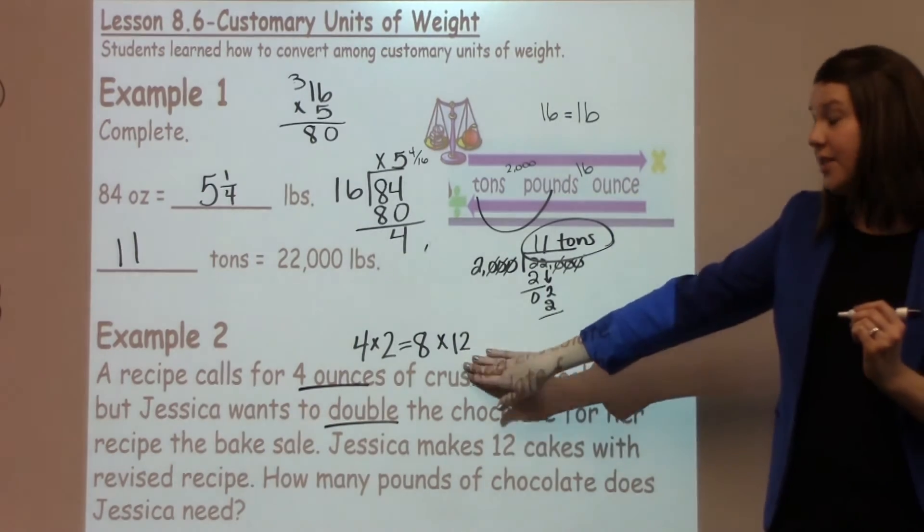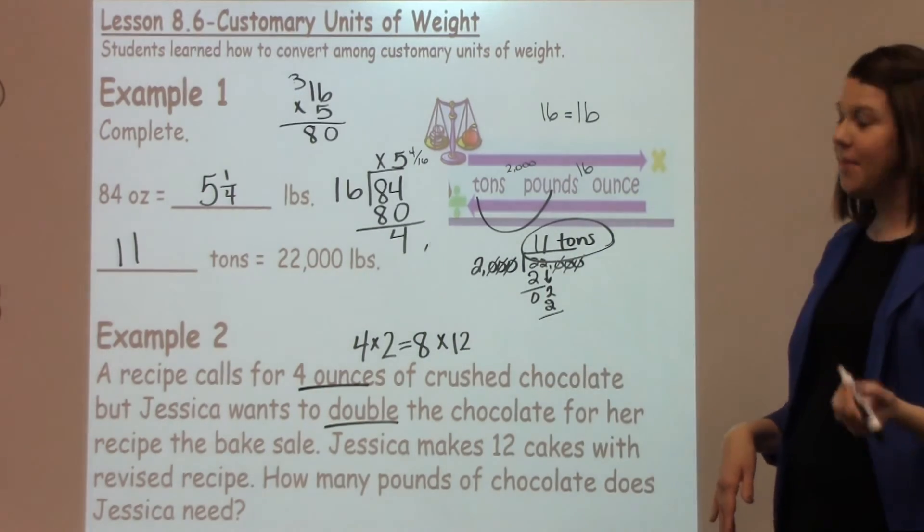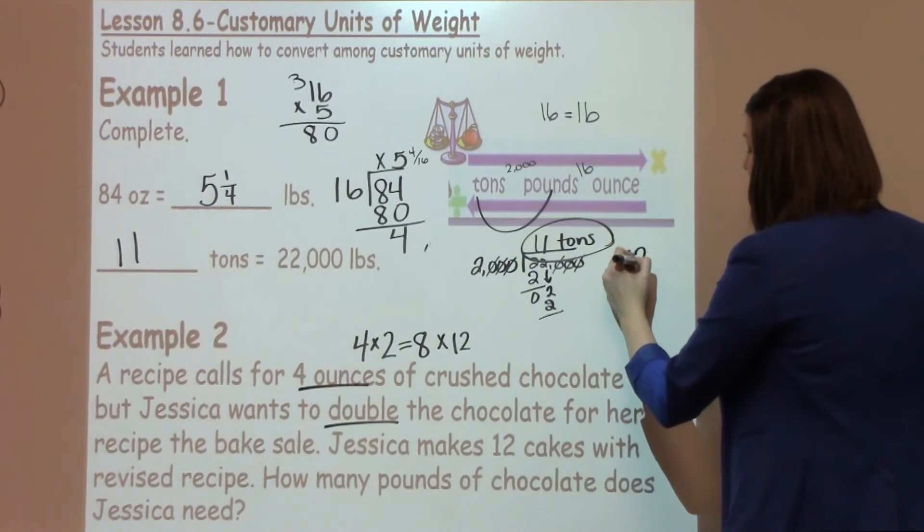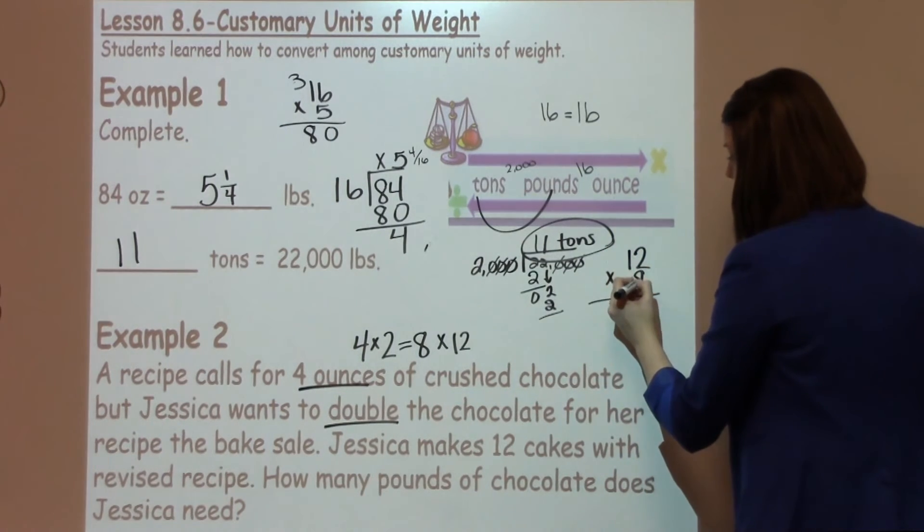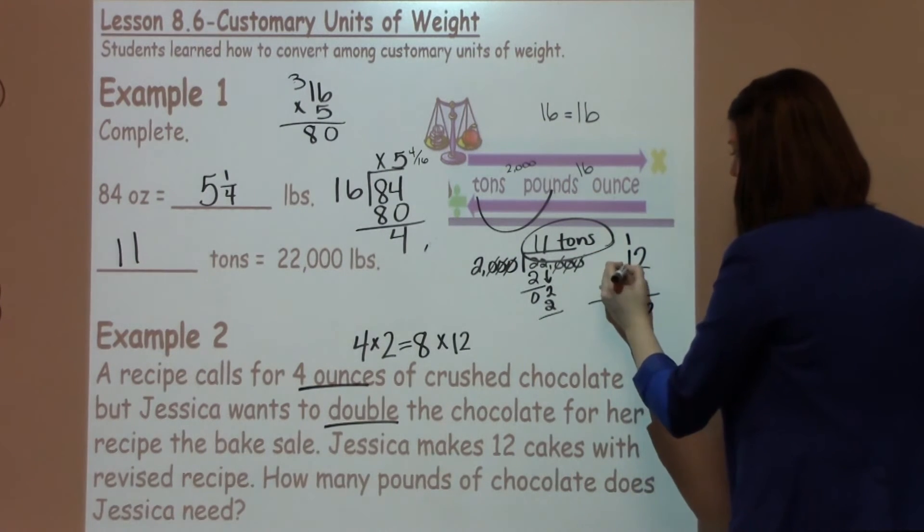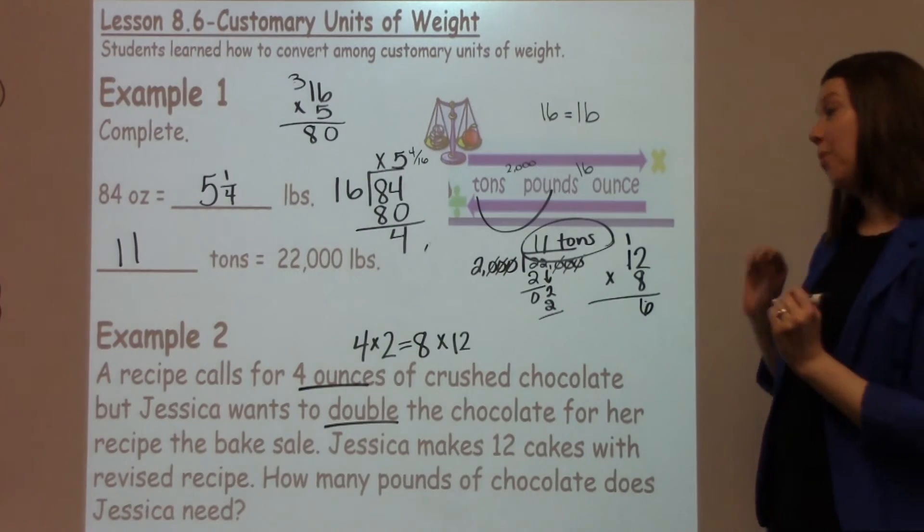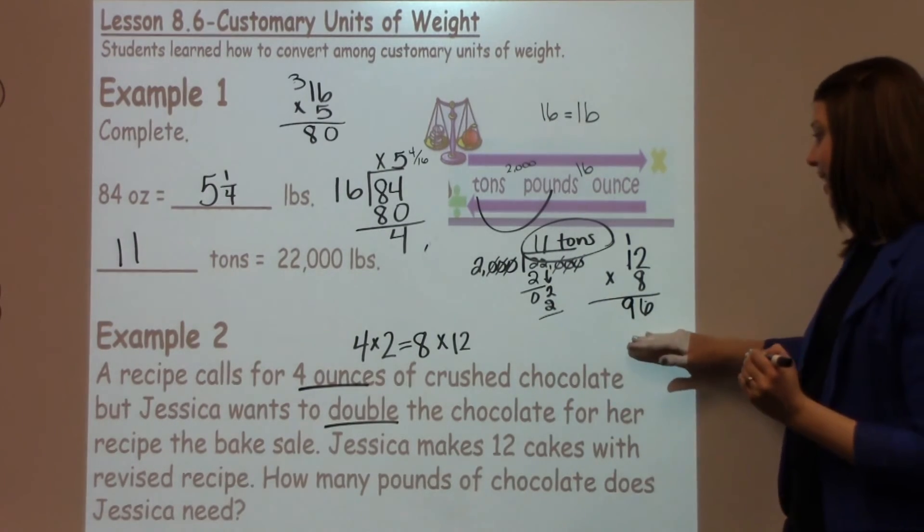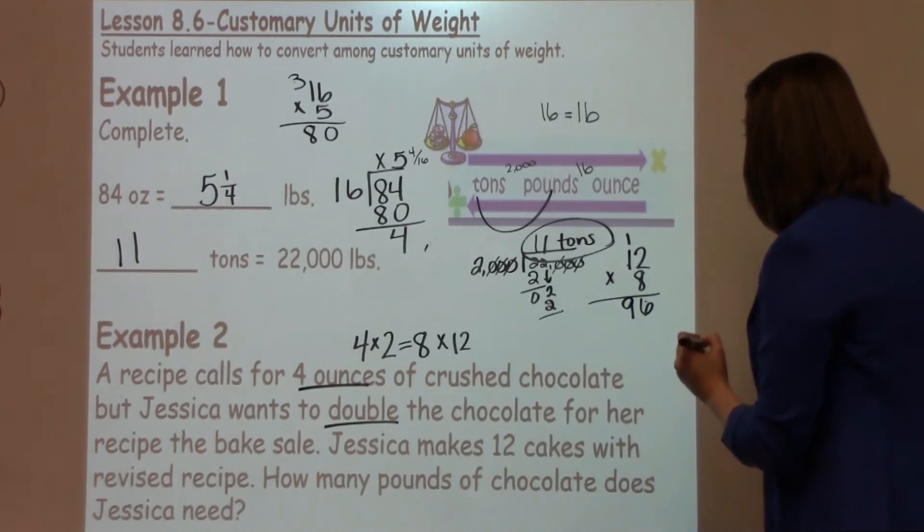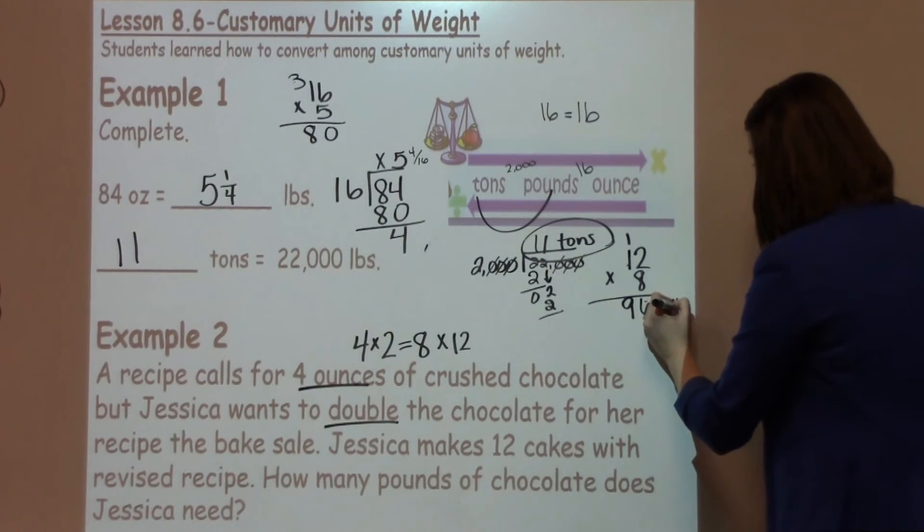Now some students might know this fact and some may not. So I'm going to go ahead and quickly write it down. 12 times 8, 2 times 8 is 16. Carry my 1. I've got 1 times 8, which is 8 plus 1 more is 9. So I know I've got 96 ounces of chocolate that I'm going to use to make this cake.